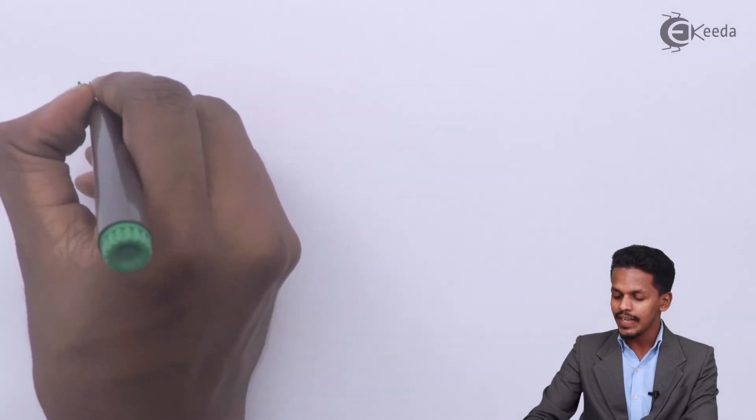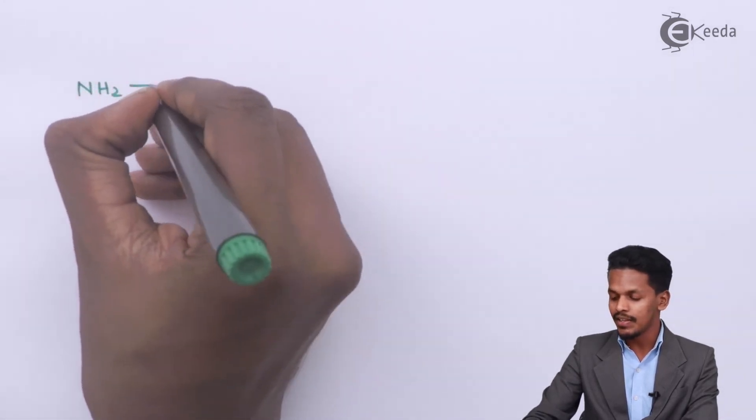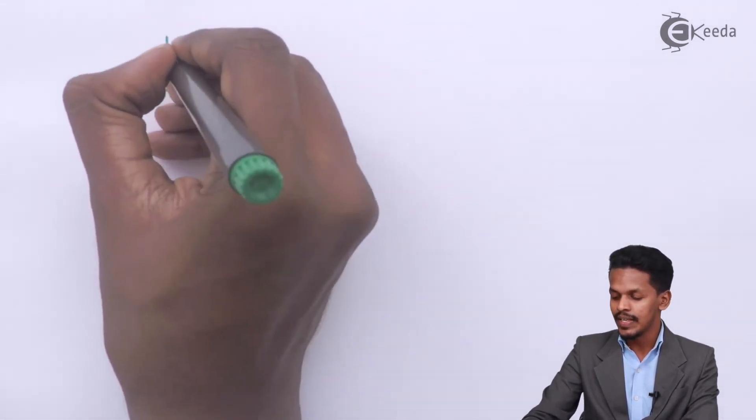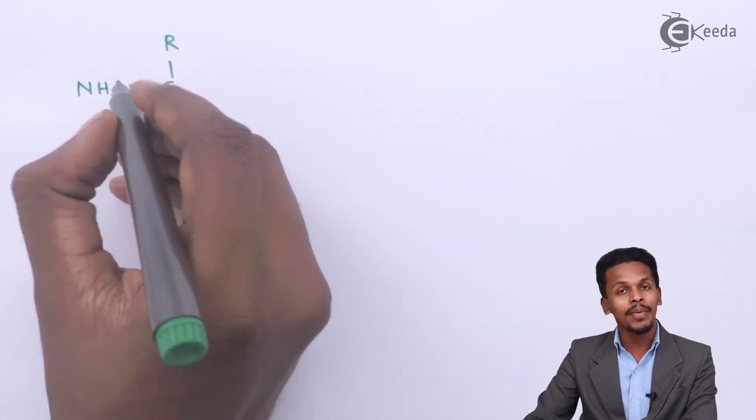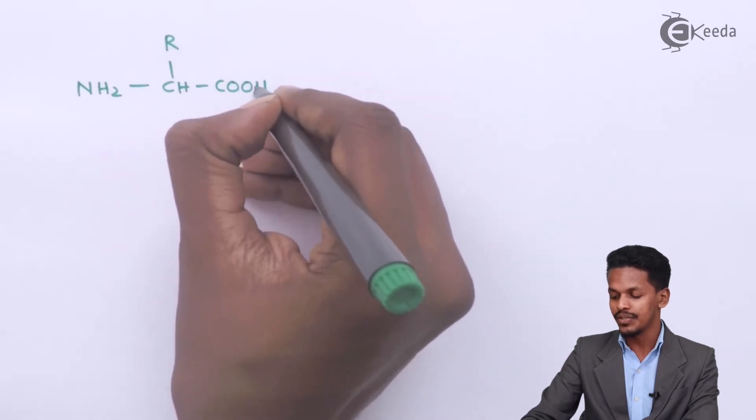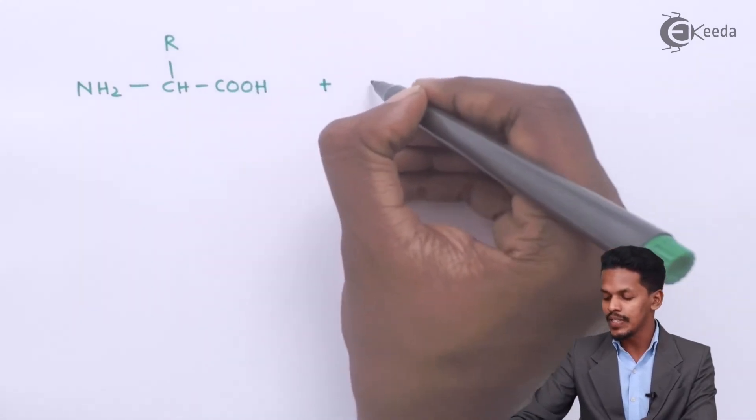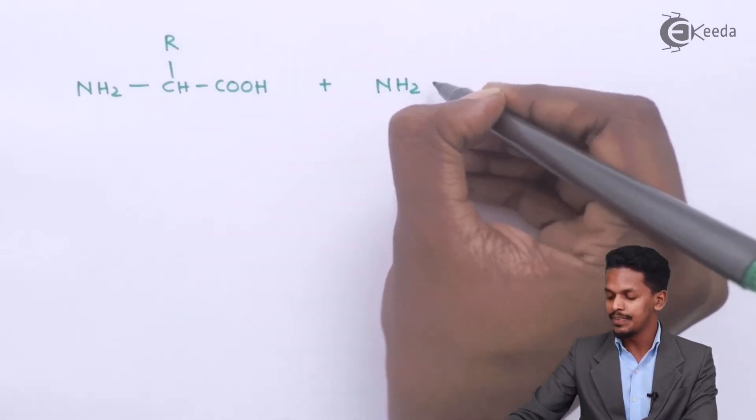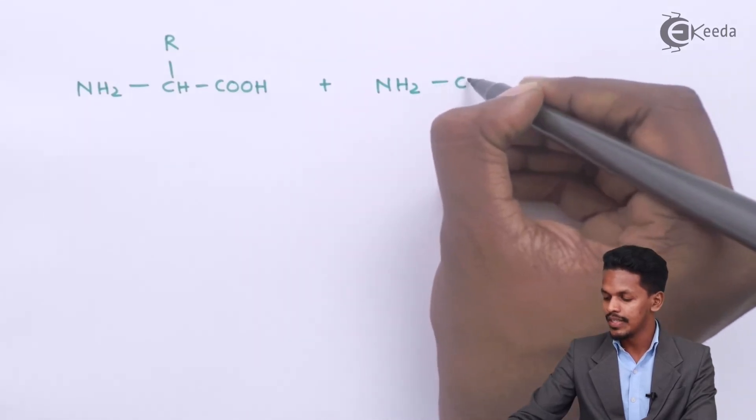Suppose if we consider an alpha amino acid, that is R, which is attached to the carbon atom, and that carbon atom is attached to NH2 and also with COOH.